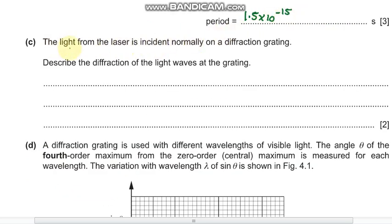Part (c) says the light from the laser is incident normally on a diffraction grating. Describe the diffraction of light waves at the grating. Basically, the waves of light are incident onto the opening of the grating and spread geometrically.